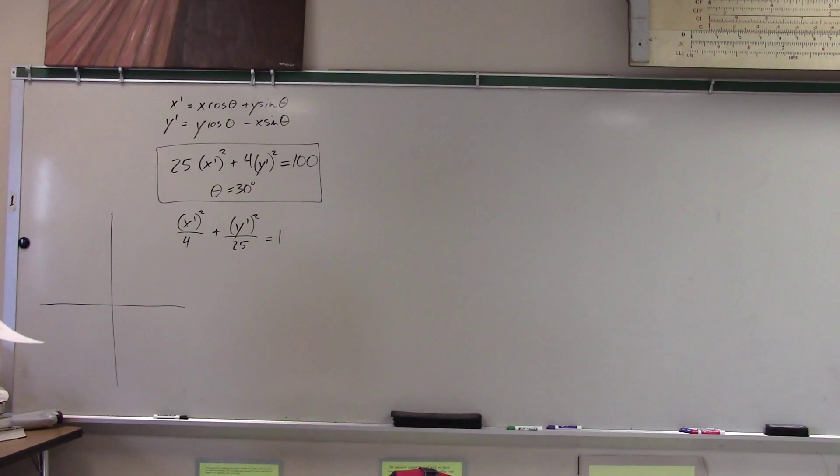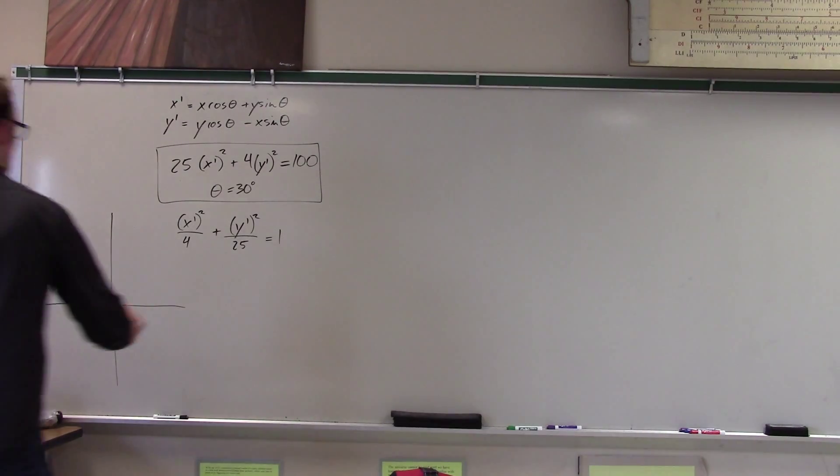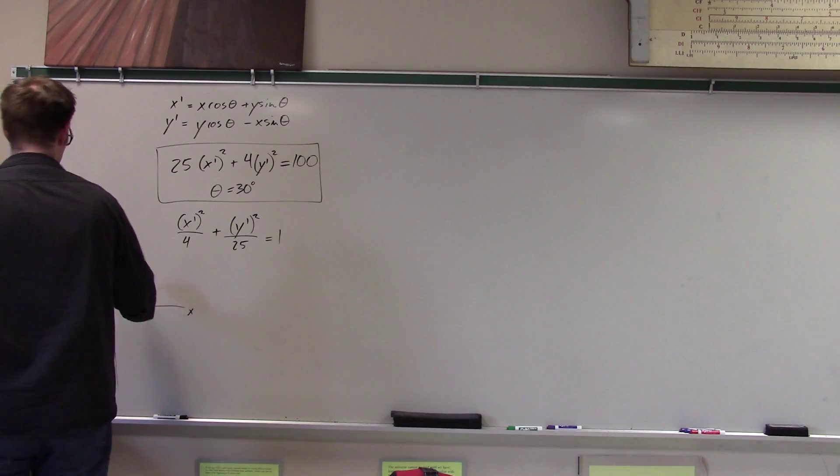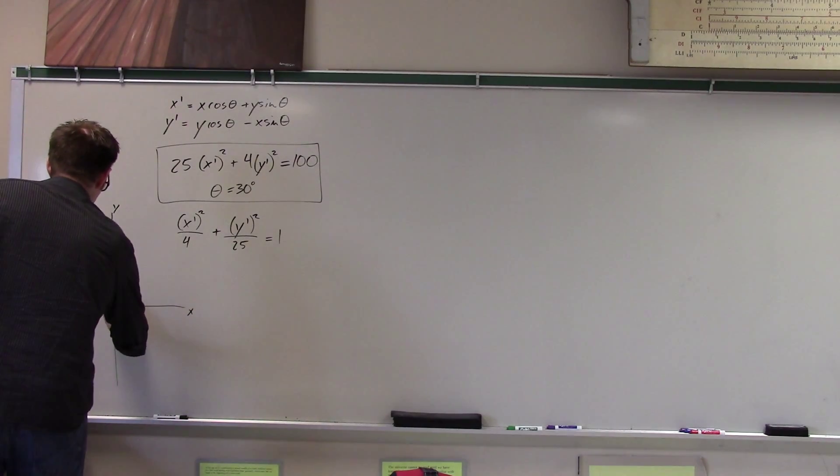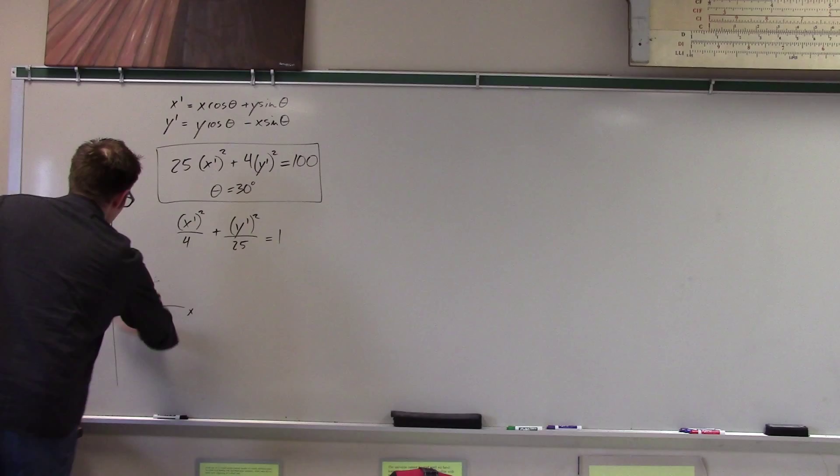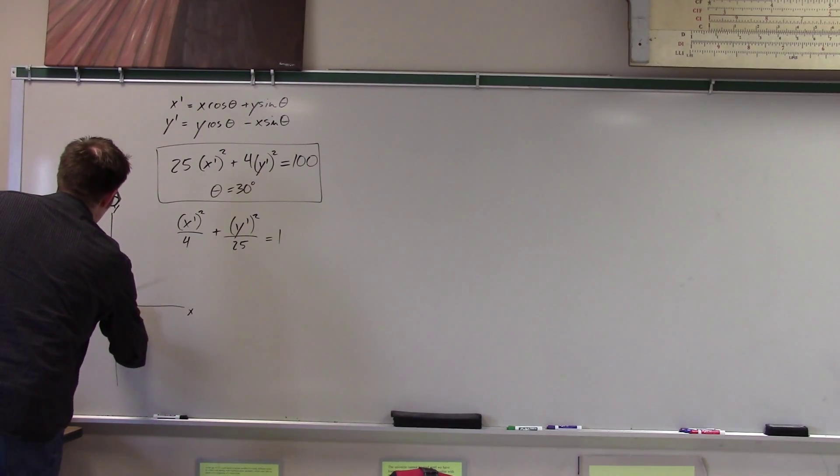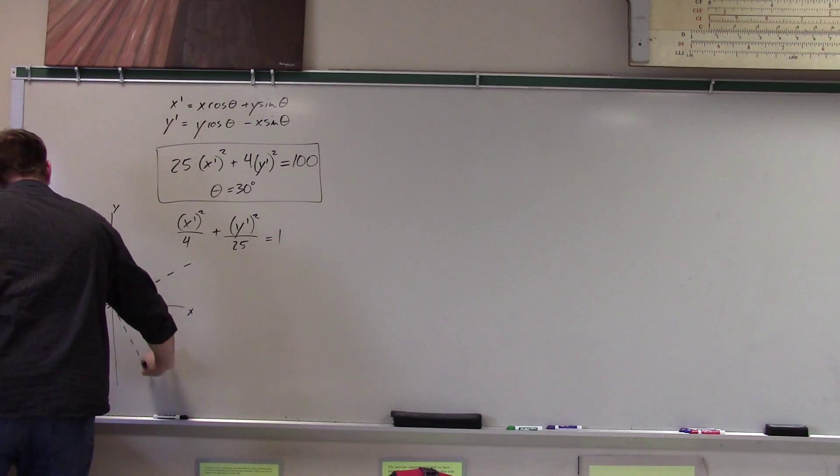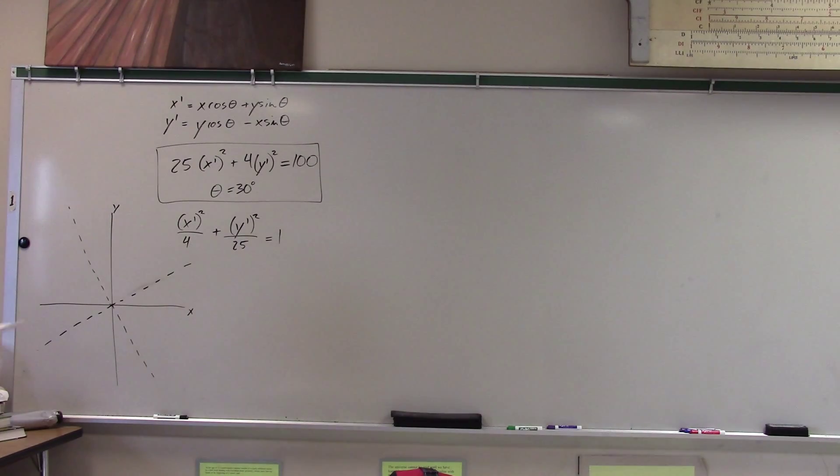What's it going to look like? Well, these are the x and y axes, so they're useless to me, but I want our x prime, y prime axes. So now, I'm going to rotate this thing 30 degrees. So that looks like about 30 degrees. And with respect to these new axes, this is just an ellipse with these relationships.